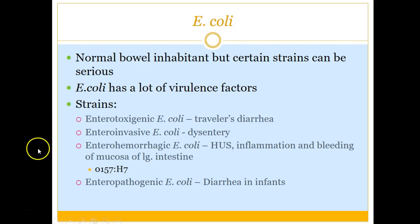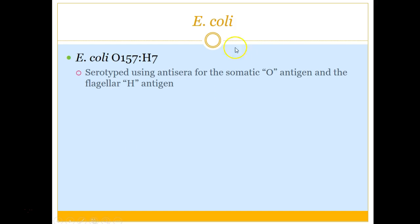E. coli O157 — anytime a patient comes in with diarrhea and the doctor wants a stool culture, we always screen for E. coli O157 as a standard part of that process. And finally, our last strain is enteropathogenic E. coli, which causes diarrhea in infants more specifically. There is also entero-aggregative listed in your book, but we won't worry about that one. So these are the four to remember.